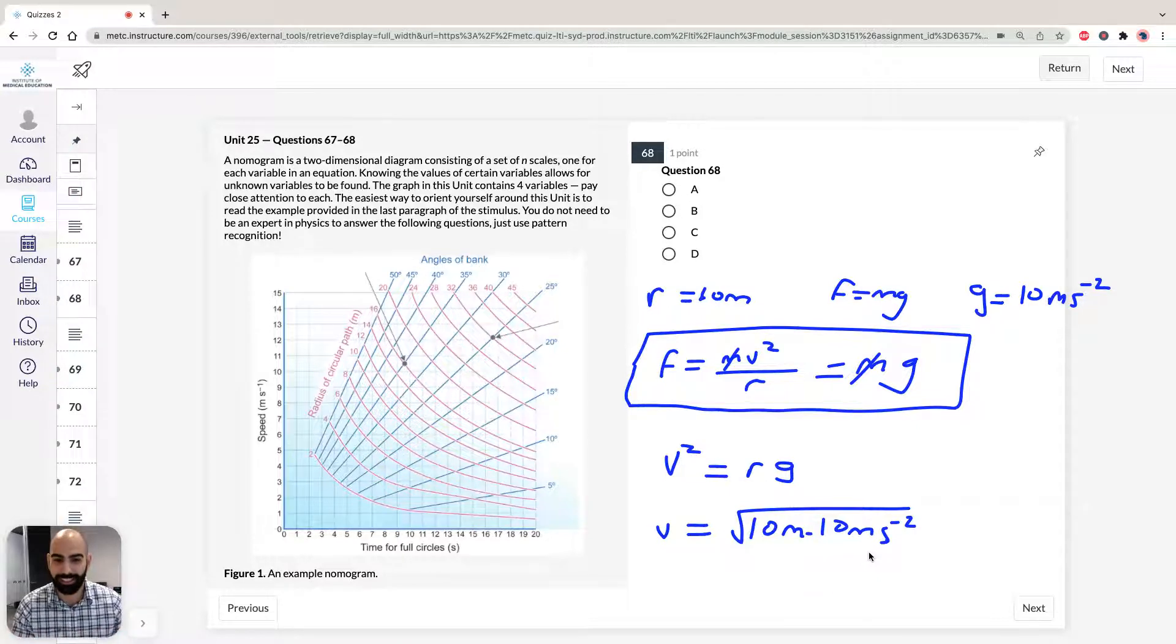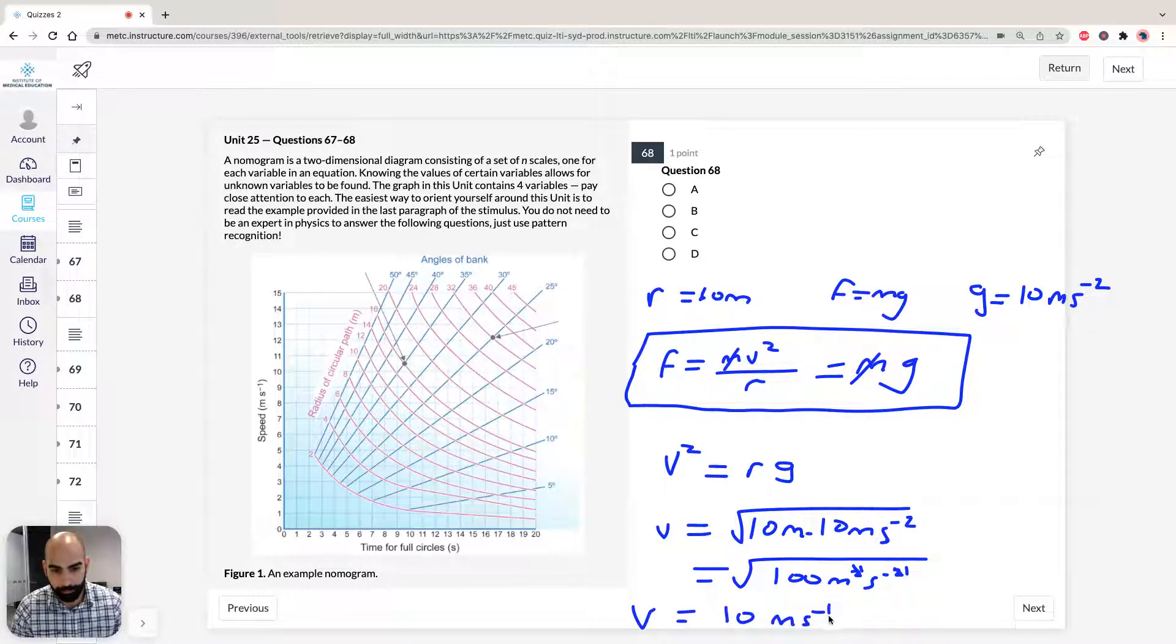Now I'm always very pedantic about units. I know in the exam you don't have time to muck around, but for a lot of students, the training wheels fall off when they practice because they don't include the units. Include the units so you can understand what's happening here. So it's square root 100 meters squared s minus 2, and therefore it's going to equal, so if it's square root, we can cross off the powers. The square root of 100 is 10, so we're going to be left with our velocity is going to equal 10 meters per second.